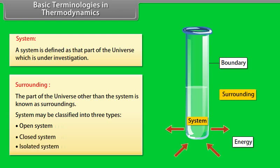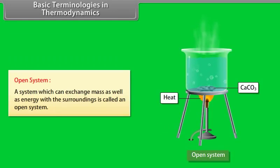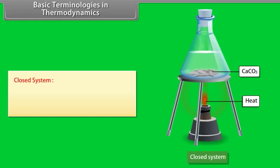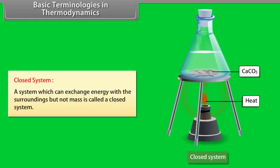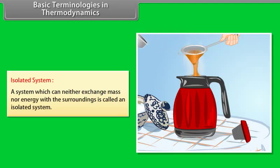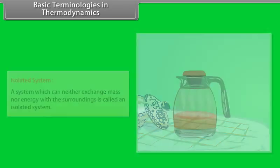Systems may be classified into three types: open system, closed system, and isolated system. A system which can exchange mass as well as energy with the surroundings is called an open system. A system which can exchange energy with the surroundings but not mass is called a closed system. A system which can neither exchange mass nor energy with the surroundings is called an isolated system.